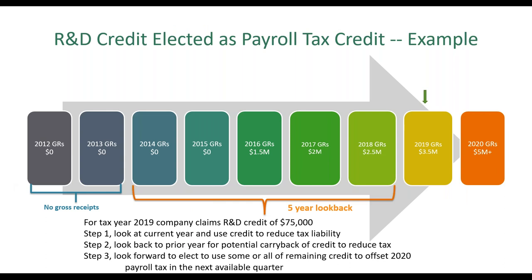This graph demonstrates how the qualification works with the five-year look back: in the current year and each year in the look back, gross receipts cannot exceed $5 million, and prior to that period — for example 2012 and 2013 — there must be no gross receipts. So in this example, a company claims an R&D credit of $75,000 in 2019: Step 1 is using the credit to reduce current tax liability, Step 2 is looking back to the prior year for a potential carry back, and Step 3 is electing to use remaining credit to offset 2020 payroll taxes in the next available quarter.